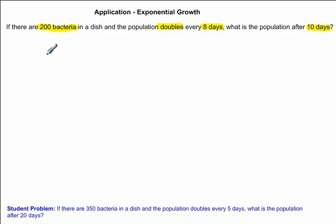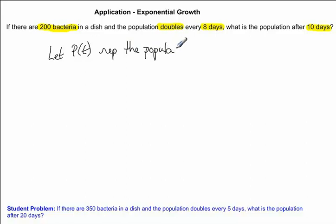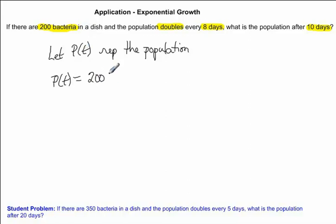Now we're going to define our variables. We're going to let P of T represent the population. I'm going to define my general formula. So for any time T, P of T is equal to 200 — this 200 comes from our initial population of the bacteria — times 2. This 2 comes from the fact that the population doubles. And 2 is raised to the exponent T over 8.